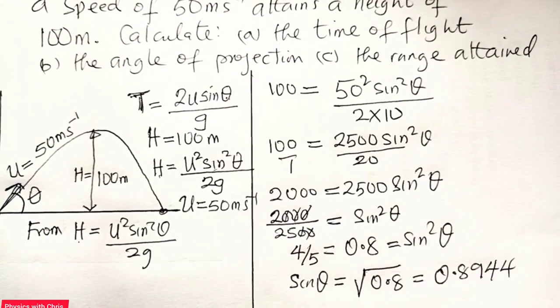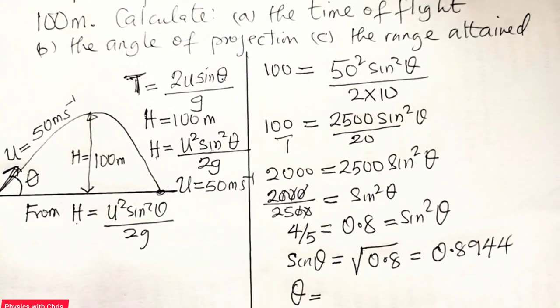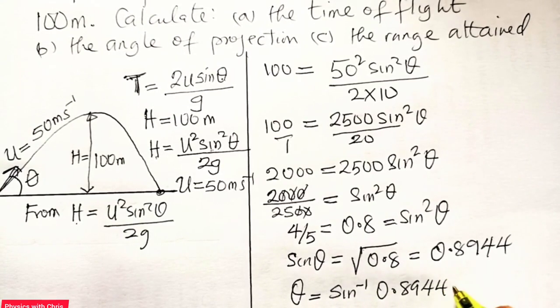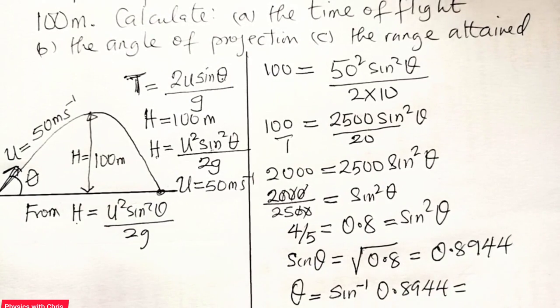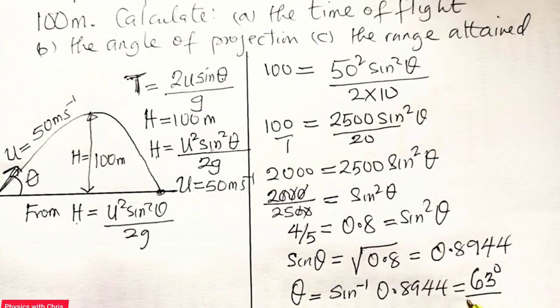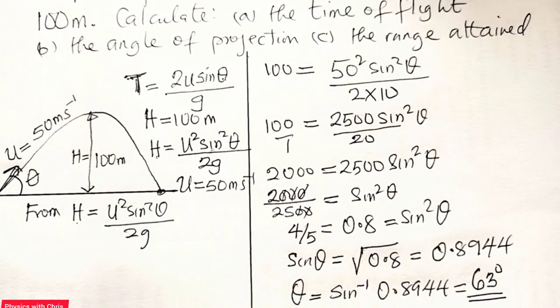So that theta, angle theta in degrees, becomes the sine inverse of 0.8944. So when I take the sine inverse of that, it gives me my value for theta, which is 63, roughly 63 degrees, to the nearest degree. It is 63 degrees. So we have found the angle of projection, which is roughly 63 degrees.